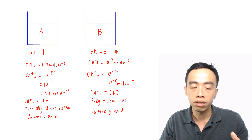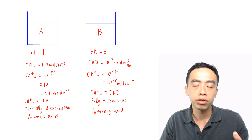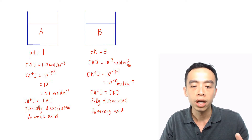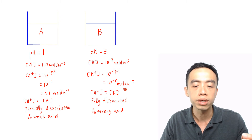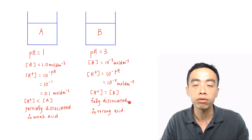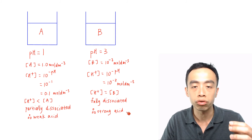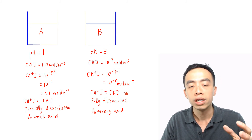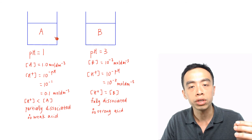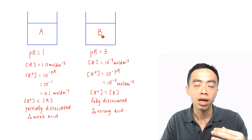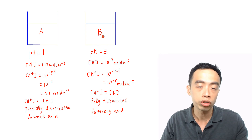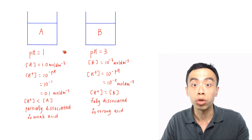Whereas for B, given pH is equal to 3 and concentration of B is 10 to the power of minus 3, we can do a similar calculation. H⁺ concentration works out to 10 to the power of minus 3 mol per dm³. In this case, the H⁺ concentration and the B concentration are the same, so this is full dissociation, and B is a strong acid. So what we have here is solution A, which is a weaker acid, but because it has a much higher concentration than B, it releases more H⁺ in total, so its pH is lower than B.